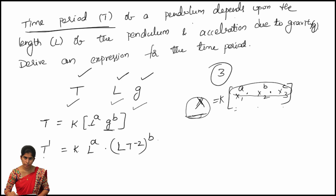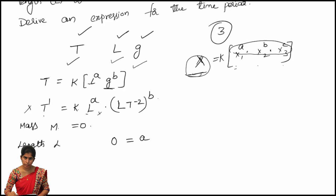Comparing the powers of fundamental quantities on both sides — first, mass M: we do not have mass M on the left-hand side or the right-hand side, so mass M equals 0 on both sides. Next, comparing the powers of length L: on the left-hand side there is no L term, so 0 equals, on the right-hand side we have L power A from the first term and L power B from G, giving A plus B equals 0.